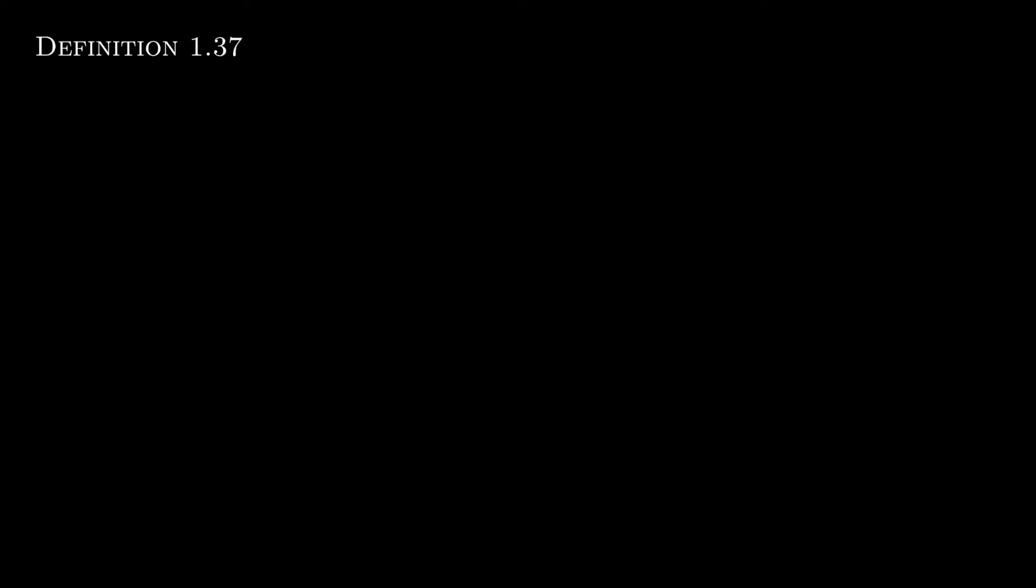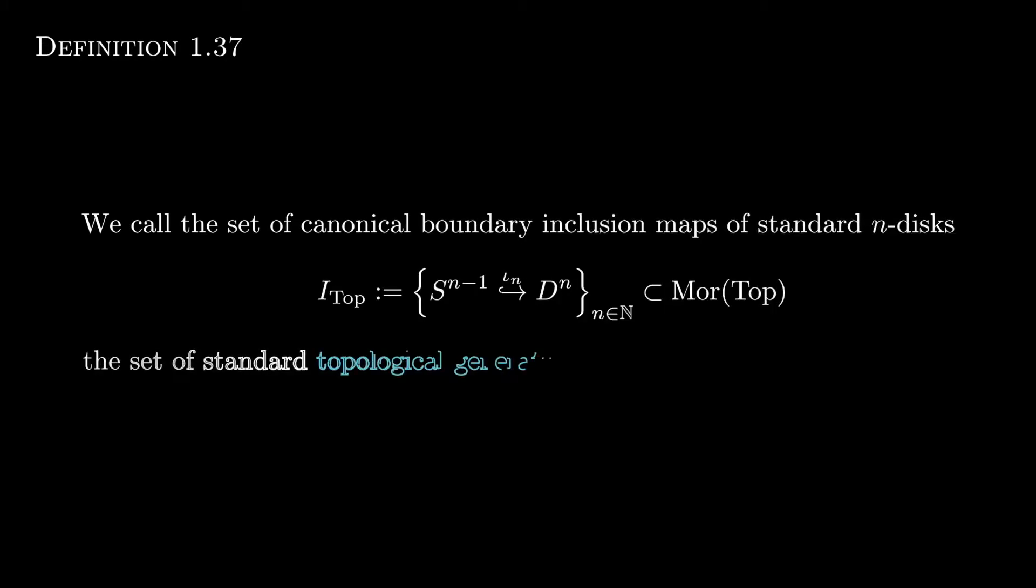We want to be able to build topological spaces using building blocks, and to know how to attach those building blocks we need to specify a certain type or set of morphisms. So we call the standard canonical boundary inclusions into the N-disc the set of standard topological generating cofibrations.